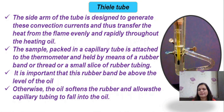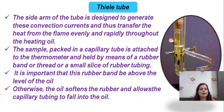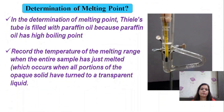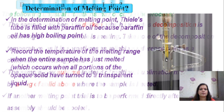Once the capillary is ready with the filled substance, you need to attach the capillary to the thermometer and then insert this into an oil bath inside the Thiele tube and apply the temperature. While determining this particular temperature, you have to look at the capillary where the entire sample is being melted or converted into transparent liquid.